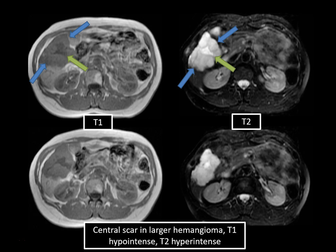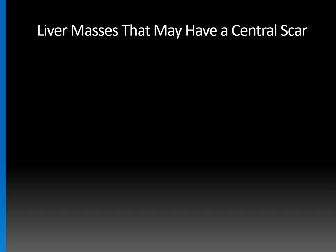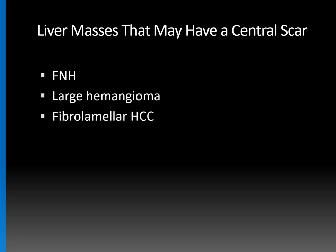Notice how homogeneously T2 bright the surrounding tumor is. Other liver masses that can have a central scar include FNH, fibrolamellar hepatocellular carcinoma, cholangiocarcinoma, and conventional hepatocellular carcinoma. However, you should not build a differential diagnosis based solely on the presence of a central scar — instead use it to refine your initial diagnosis, since all these lesions occur in patients with different risk factors, gender, and age.